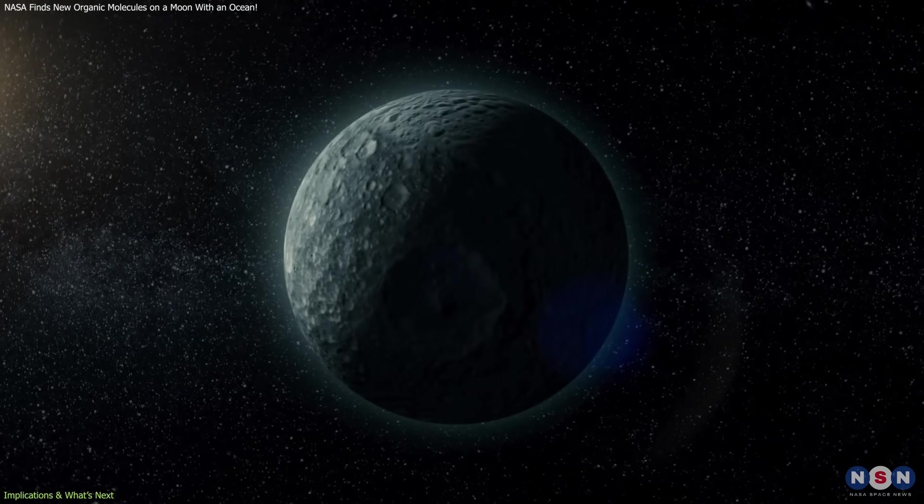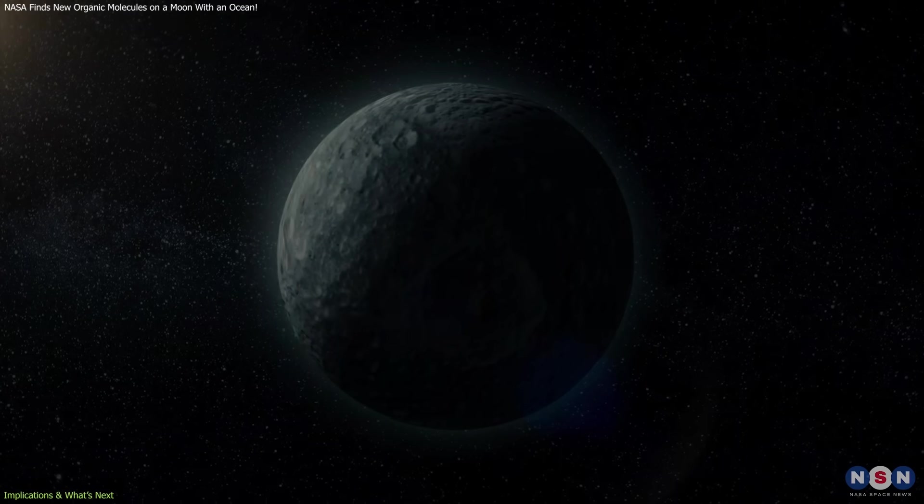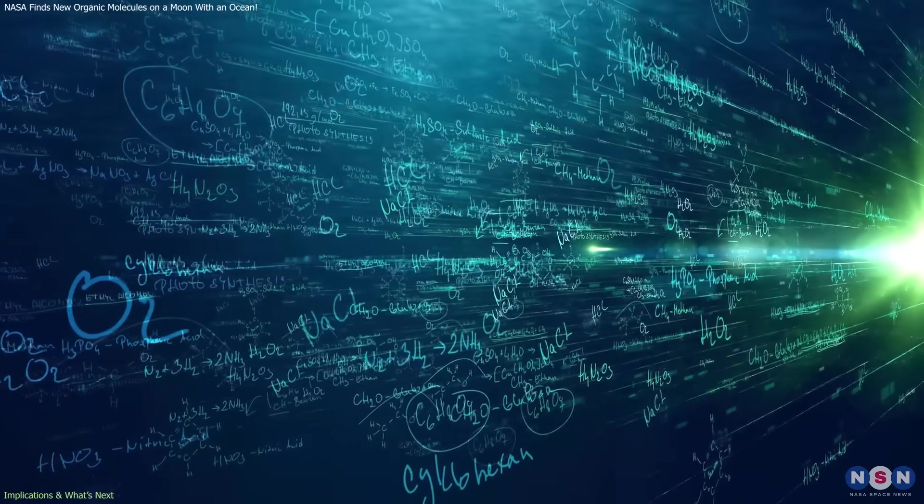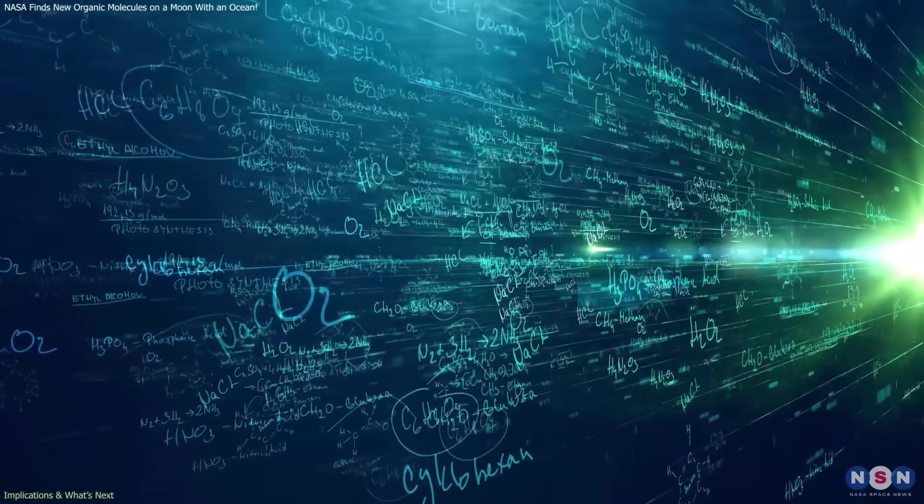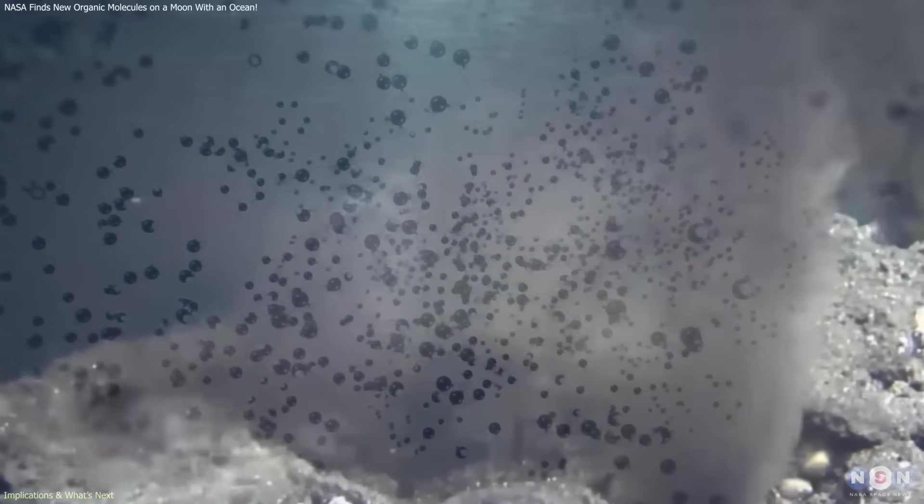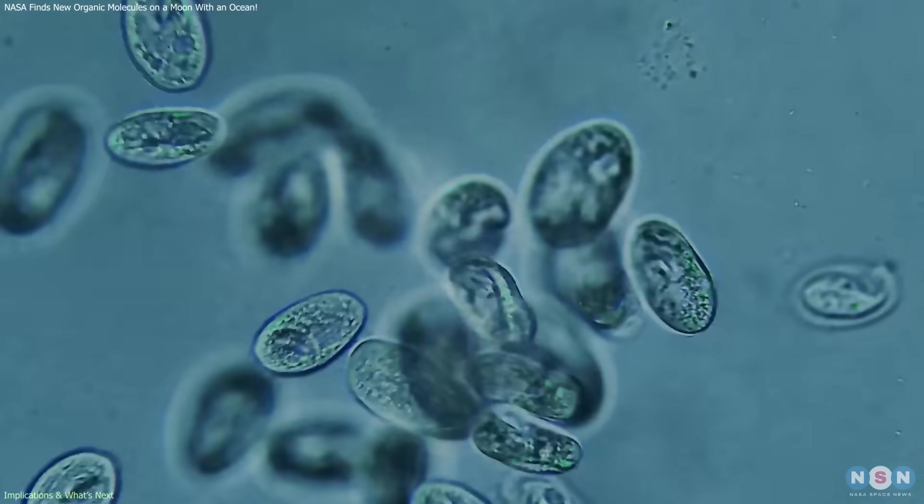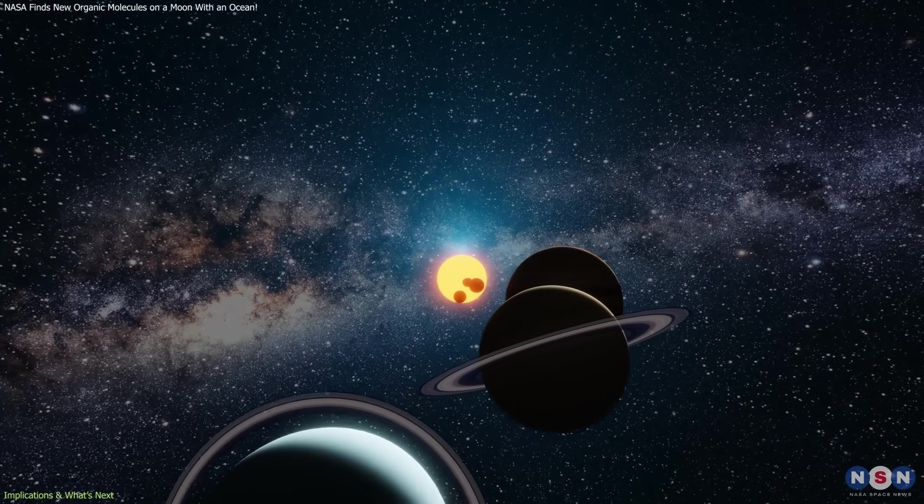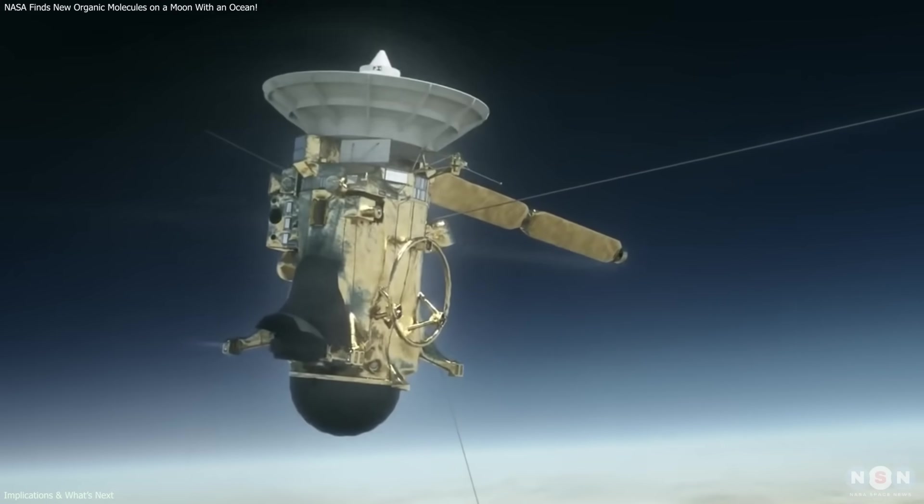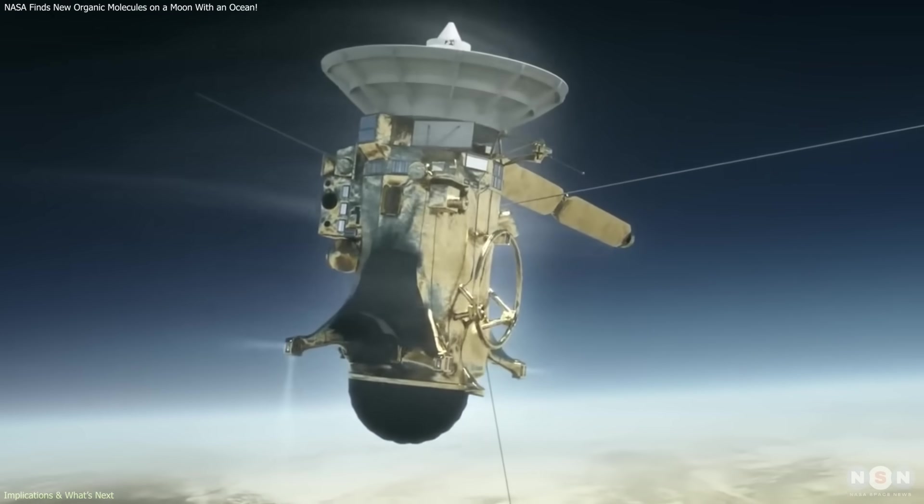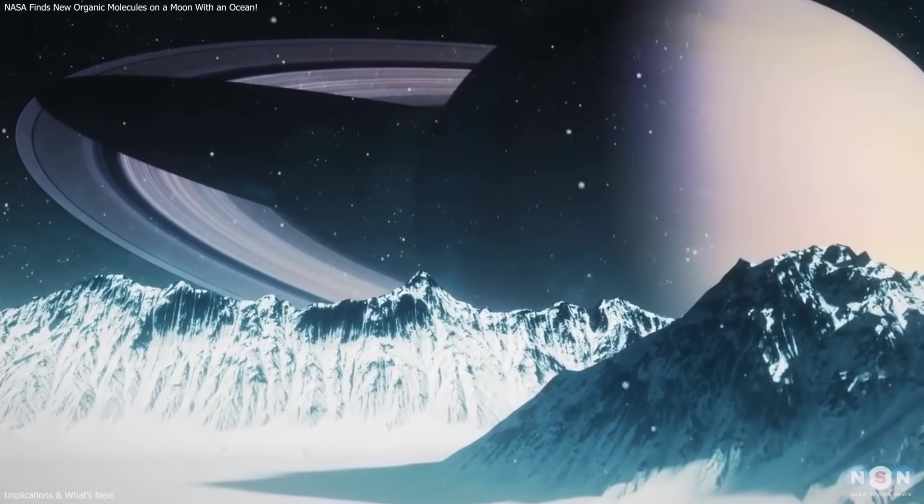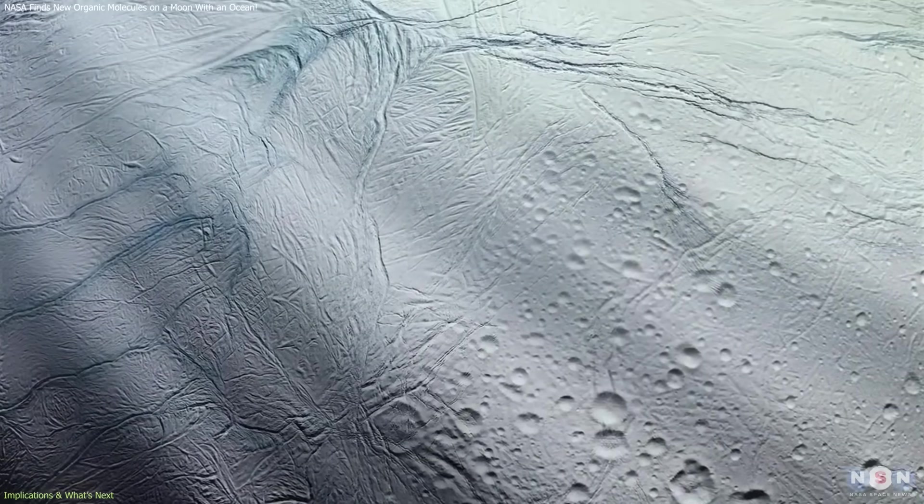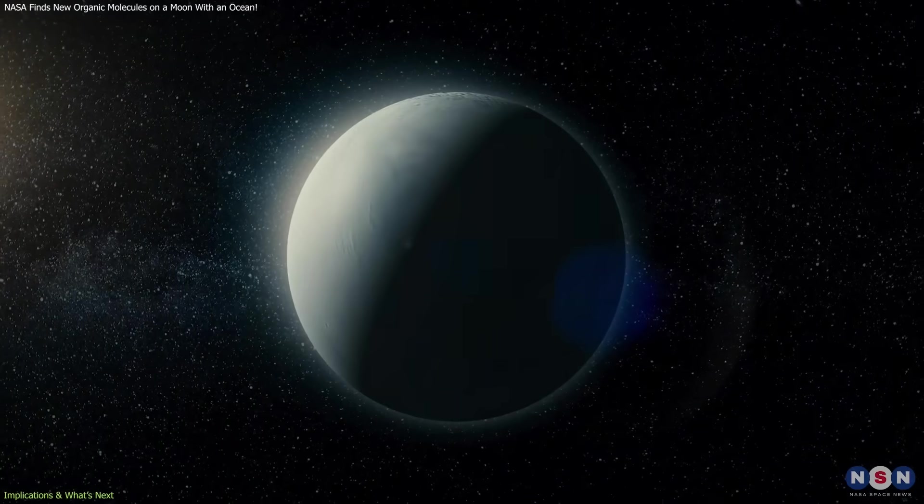The broader implication of this discovery extends beyond Enceladus itself. It reinforces the idea that subsurface oceans beneath icy crusts may be capable of sustaining complex chemistry independent of sunlight. If internal heating and rock-water interactions are sufficient to drive these processes, then potentially habitable environments may exist in many more locations throughout the solar system than previously assumed. As the scientific community continues to re-examine Cassini's data using modern techniques, additional discoveries may still emerge. Each re-evaluation brings new insight into the moon's internal processes and further refines the questions future missions should aim to answer.